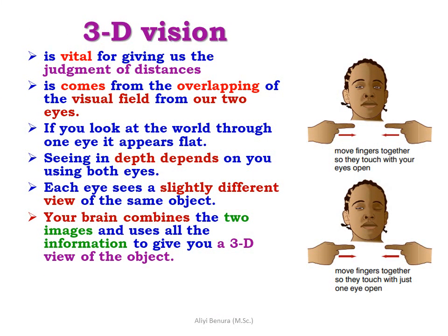Three-dimensional vision is vital for giving us judgment of distance. It comes from the overlapping of the visual fields from our two eyes. If you look at one object through one eye it appears flat, but seeing in depth depends on using both eyes. Each eye sees a slightly different view of the same object, and your brain combines the two images and uses all the information to give you a 3D view.